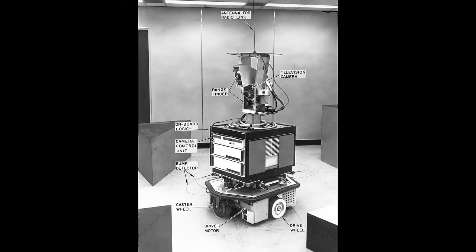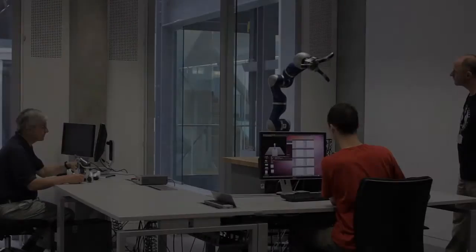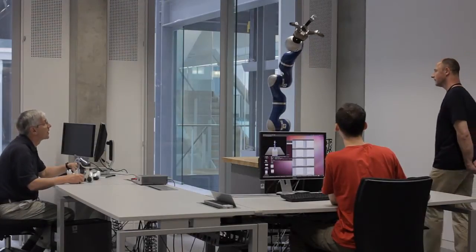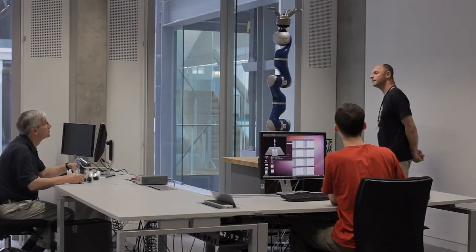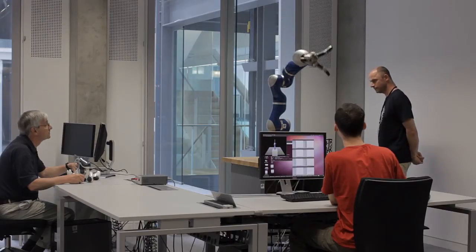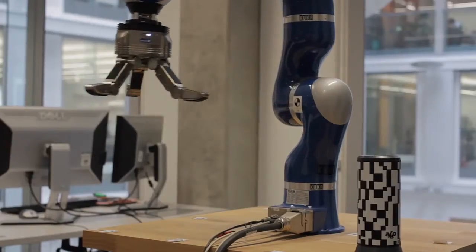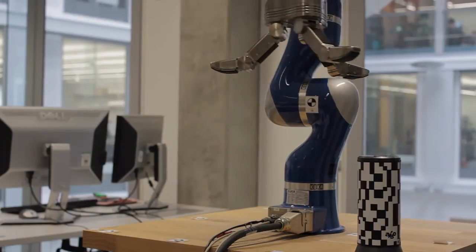SHAKEY is now on display at the Computer History Museum in Mountain View, California. As we saw, FREDDY included an early robot arm, but as you can see here, technology has come a long way. For example, this modern research robotic arm has many more capabilities.